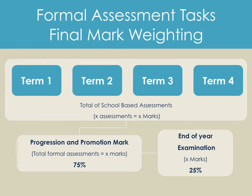The weighting of formal tasks at the end of the year is very important. You have formal or school-based assessments in terms one, two, three, and four, which together give a total of X marks for school-based assessments for the year. This is converted to 75% of your progression and promotion result, while the end-of-year exam counts 25%, making up 100% together. The X marks differ slightly across grades four, five, and six — download the PDFs after this video for the actual breakdown required in each grade.